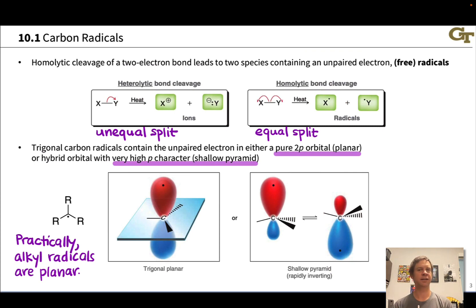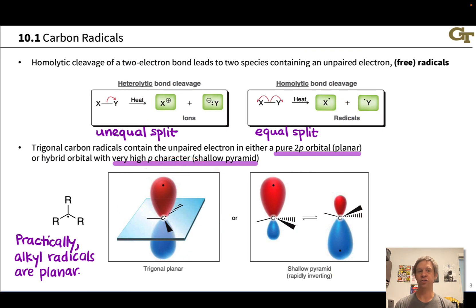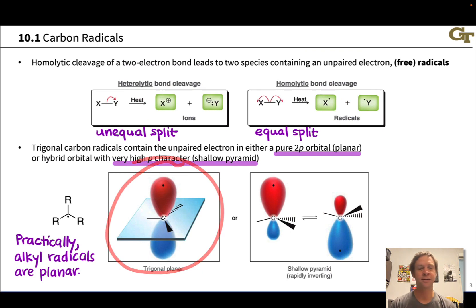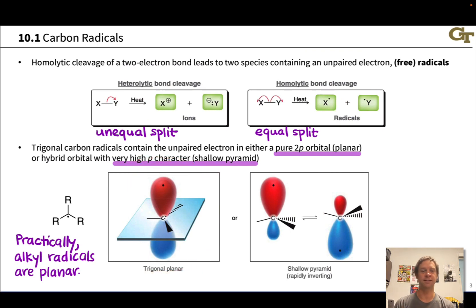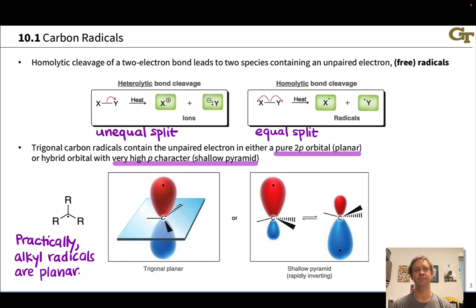This also gives us insight into the electronics of carbon radicals, because this looks a lot like a carbocation. The carbocation is an electron-deficient electrophilic species, and carbon radicals are very similar — they act like electron-deficient species, because they are, after all, violating the octet rule. I only have seven total electrons around the central carbon in this trigonal carbon radical, and so that analogy to carbocations runs very deep, both in the reactivity and in the orbital structure. The analogy between carbocations and radicals also extends to the stability trends of carbon radicals.